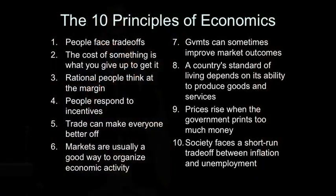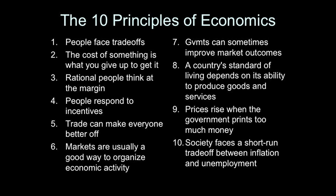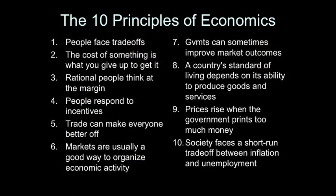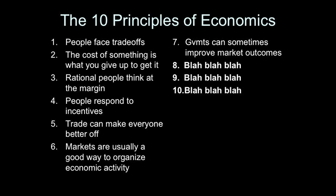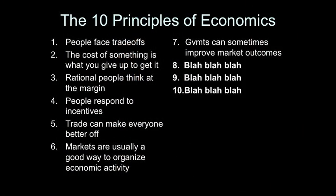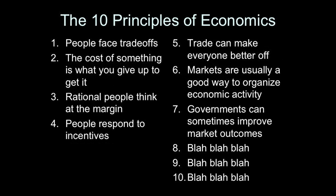We're going to begin by separating them into the first seven principles, which are microeconomics, and the last three, which are macroeconomics. The difference, of course, being that microeconomists are wrong about specific things, and macroeconomists are wrong about things in general. We're going to begin with the macro principles, 8, 9, and 10. Believe it or not, these all have the exact same translation, namely blah blah blah. As proof, I need only to remind you that macroeconomists have successfully predicted nine out of the last five recessions. And as further proof, we can now go up one font size.